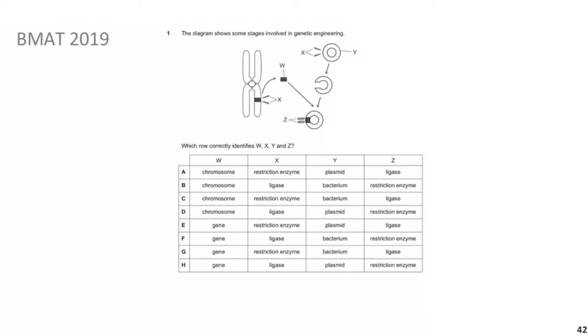Looking at the diagram, we start with the gray shaded structure — a chromosome. We know this because it has two sister chromatids held at the center by a centromere. A part of a chromosome by definition is just a gene, so W must be a gene. That already lets us exclude half the options and increases our chances significantly.